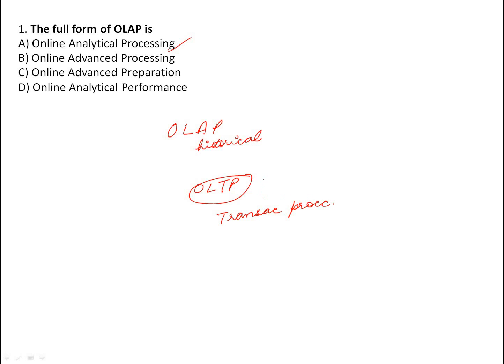OLTP uses current data. For example, if you want to see the attendance of an employee for this month, it would be OLTP. If you want to see attendance for the last two years, it would be OLAP — that is old/historical data. The data from OLTP is transferred into OLAP on a regular basis. For more detail, you can refer to the video I have made on data warehousing and data mining.